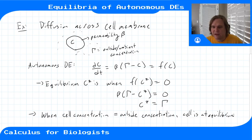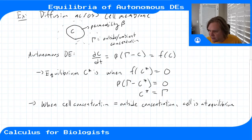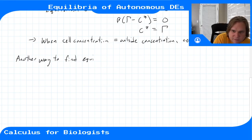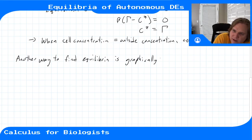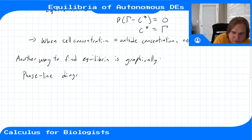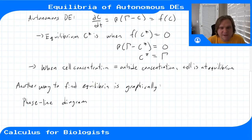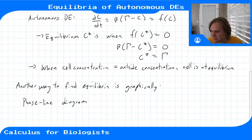Another way to find equilibria is graphically, using what's called the phase line diagram. We're looking for where the right-hand side function f(c) equals zero. For a linear equation like this it's not hard to solve algebraically, but sometimes these functions can be more complicated and we'll need a graphical method to find those zero crossings.